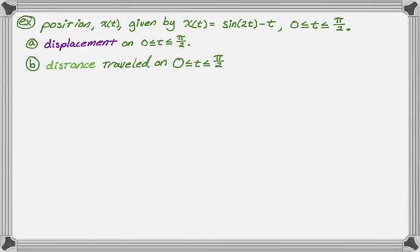Here's the problem. We have position given by x(t) = sin(2t) − t, and t is between zero and π/2. Those are the start and end points. We want to find displacement on the interval from zero to π/2, and we want to find distance traveled on the interval from zero to π/2.